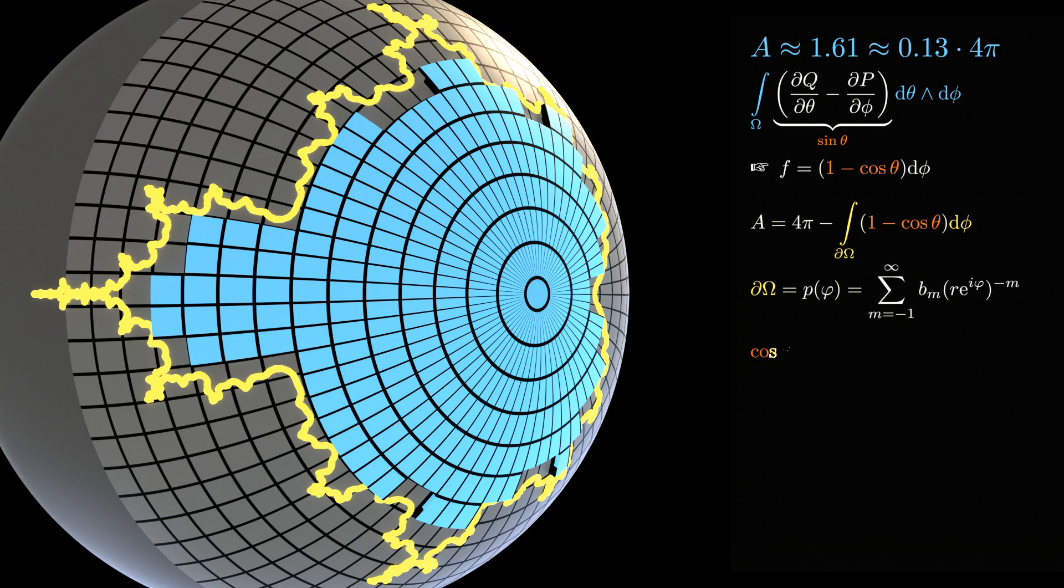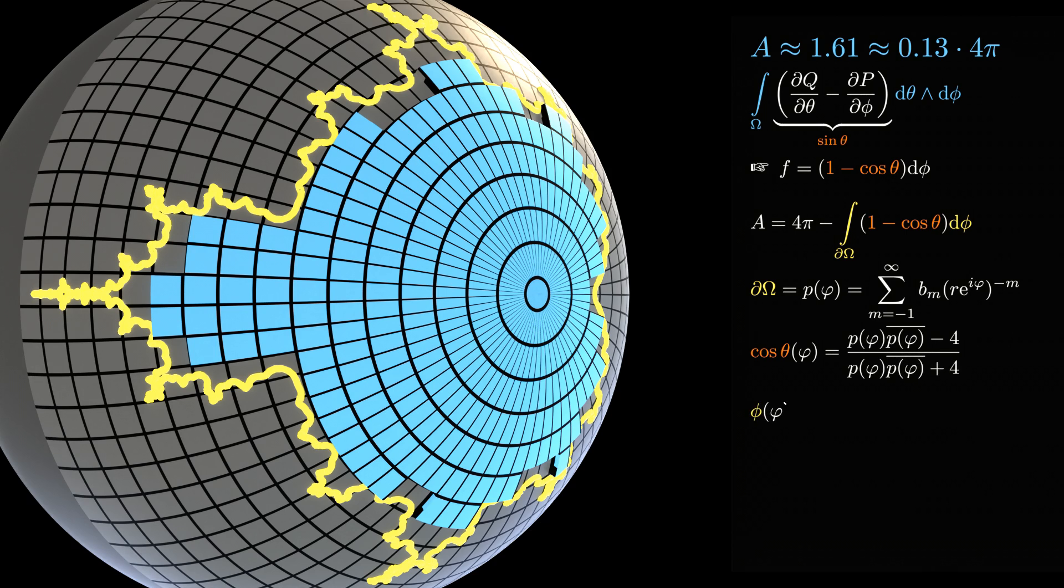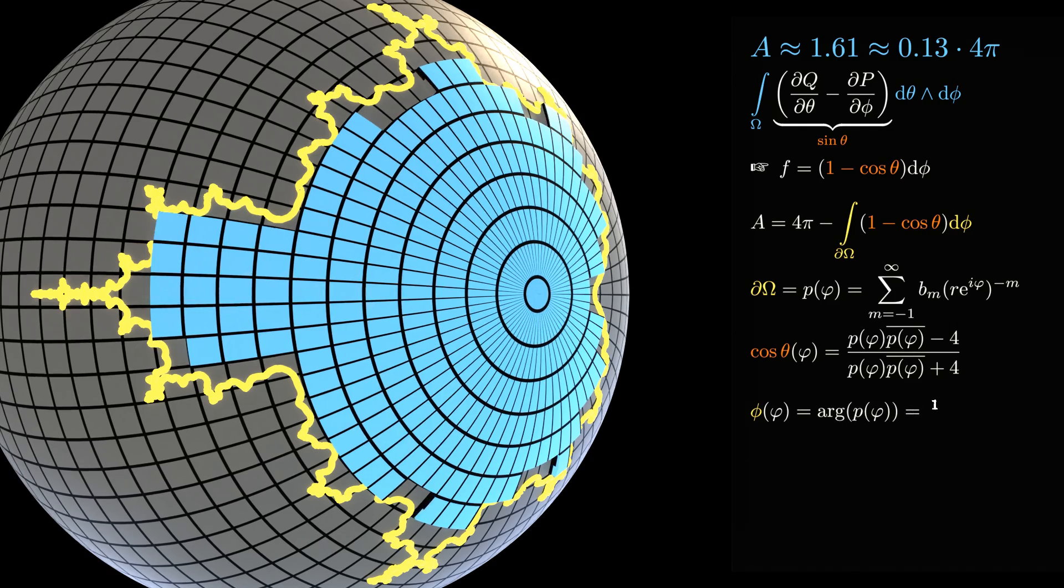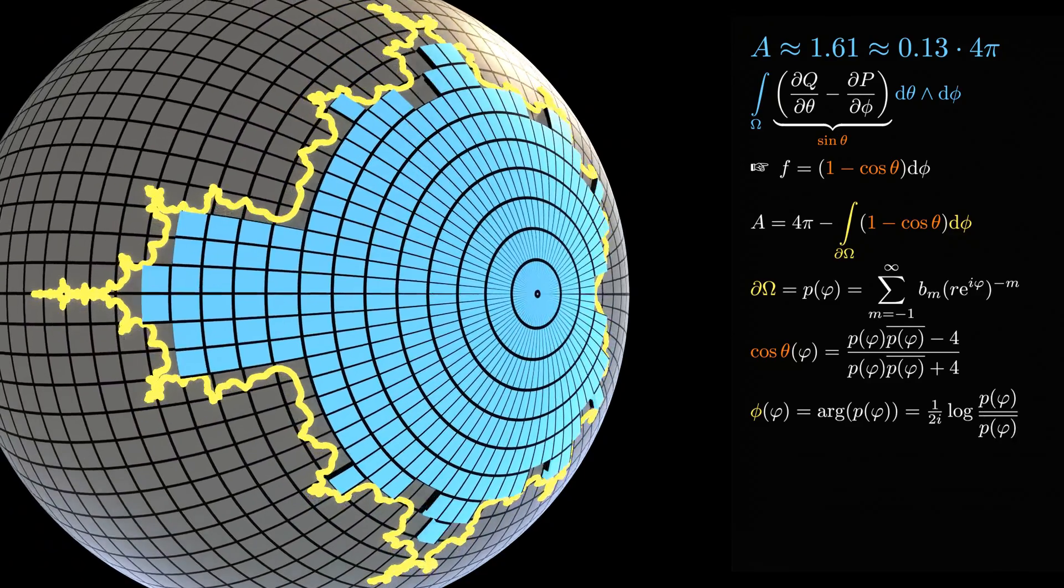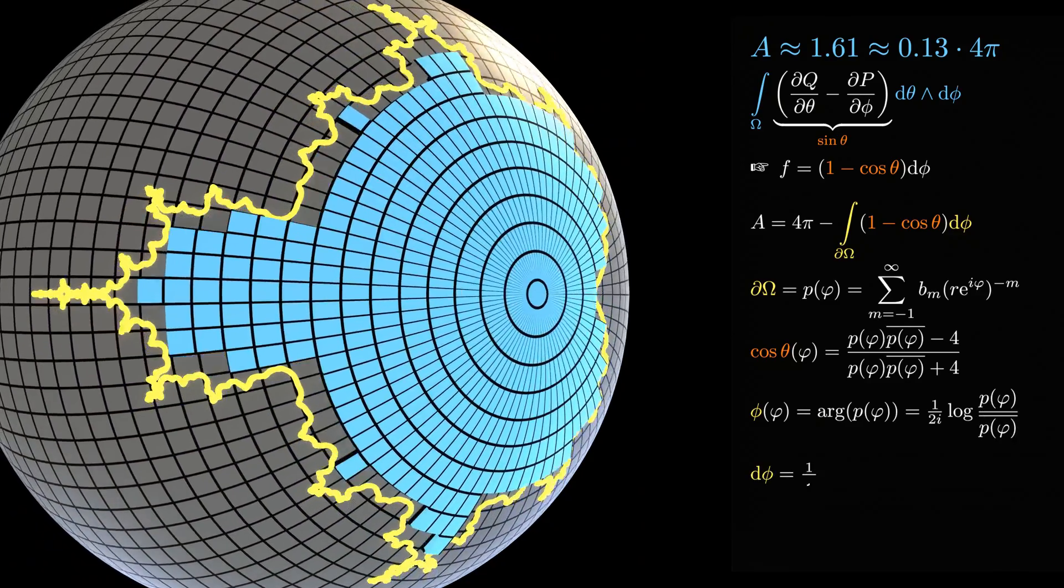Therefore, the cosine of θ along the yellow curve can be expressed as a function of the parameter φ that parametrizes the original circle. Similarly, the longitude value of each point on the curve depends on this parameter due to the circular mapping. Therefore, the range of integration can be pulled back to an integration along the initial circle.